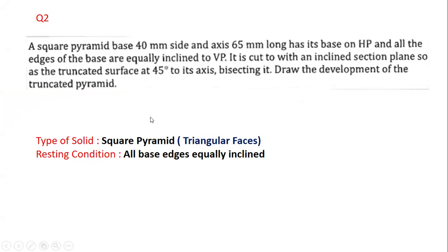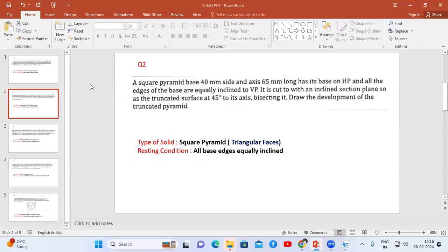The data required to solve the problem: the type of solid is a square pyramid. Remember, for all pyramids, when we cut and unfold it, we are going to see the triangular faces. In order to draw the top view, we need the resting condition. In this problem, all base edges are equally inclined to VP.